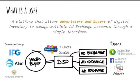An advertiser can connect with the right publishers, buy the right inventory, and track performance — all through this centralized platform called a DSP.